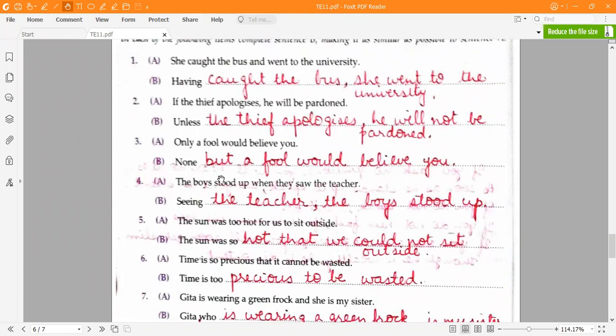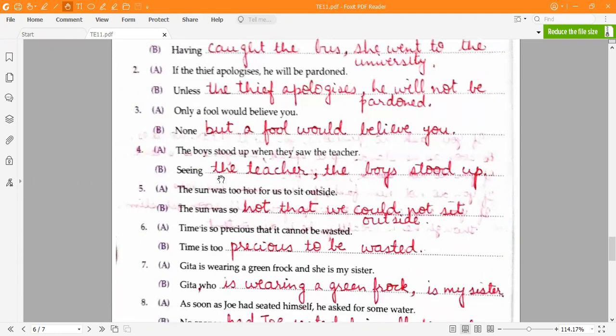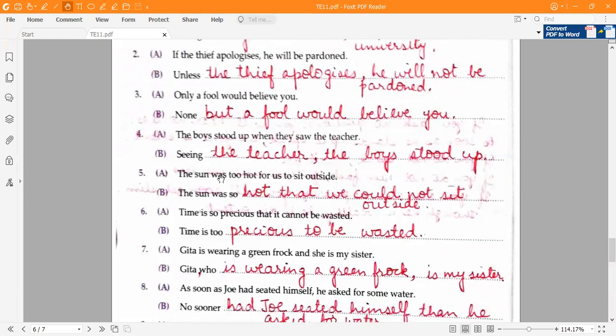Second one, if the thief apologizes, he will be pardoned. Unless the thief apologizes, he will not be pardoned. Third one, only a fool would believe you. The answer is none but a fool would believe you.